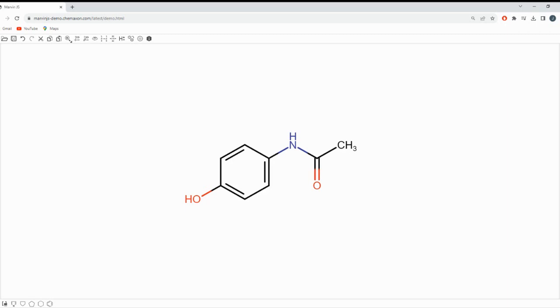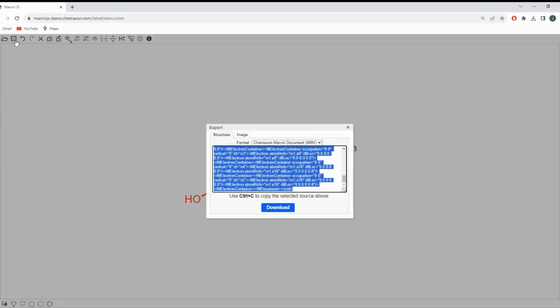Once you've created your chemical structure, it's time to save and export your work. Click on floppy disk and select save to save your project. MarvinSketch uses the MERV file format. This allows you to draw similar structures without having to draw from scratch again.